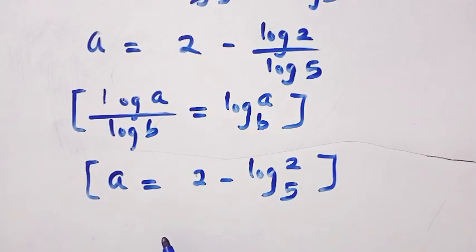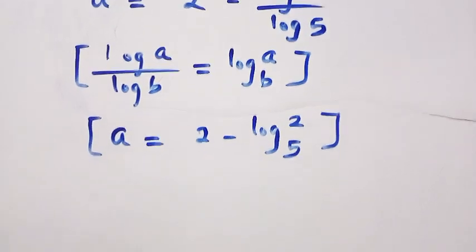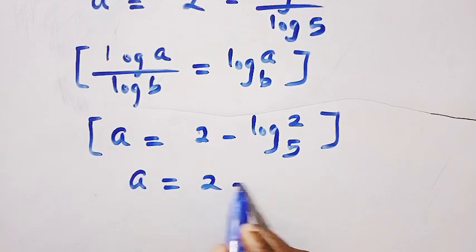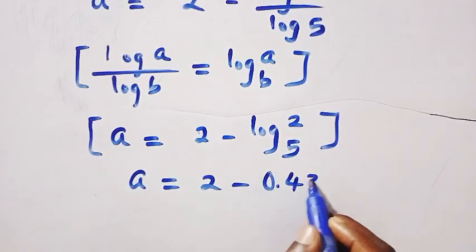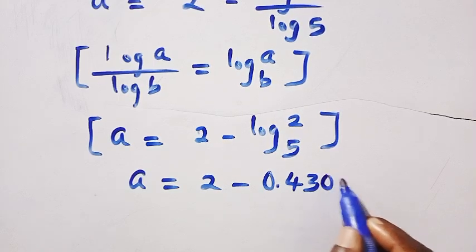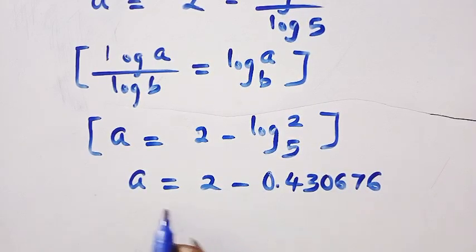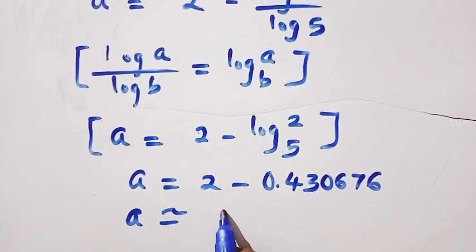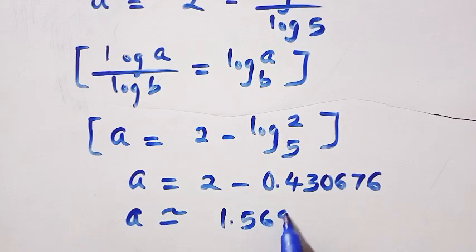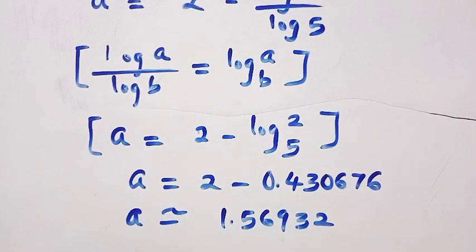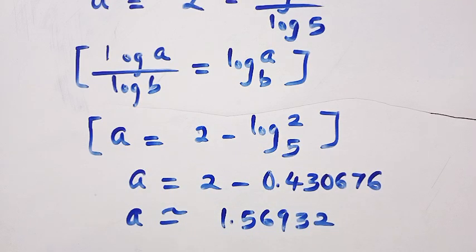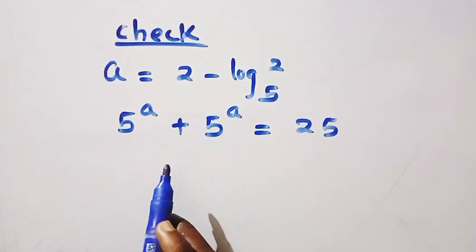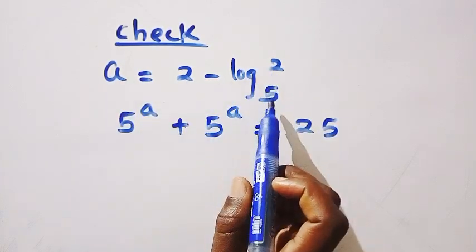So this is the final answer. The numerical form is given as a equals 2 minus log 2 base 5, where log 2 base 5 is approximately 0.430676, giving a approximately equal to 1.56932. Let's now verify the answer using a equals 2 minus log 2 base 5.